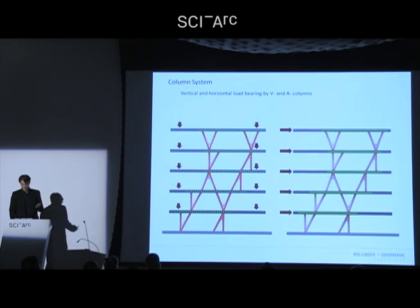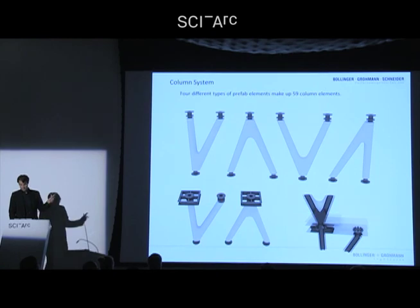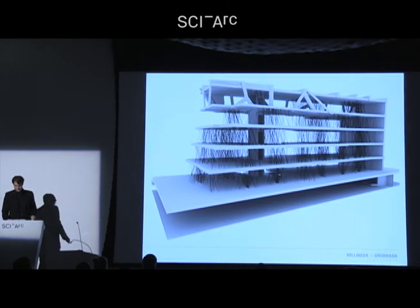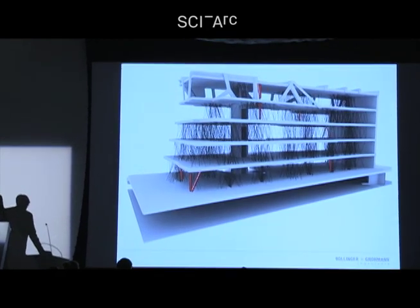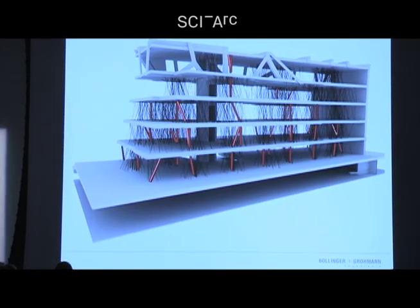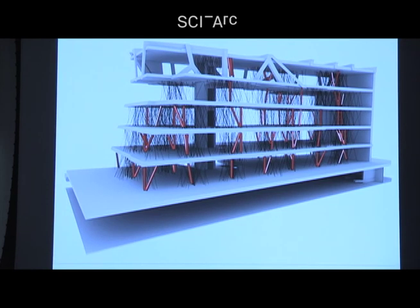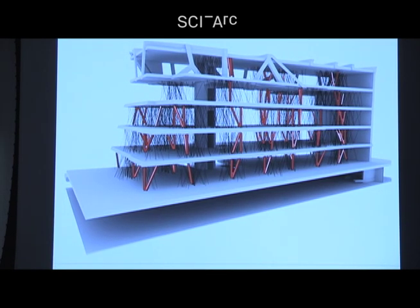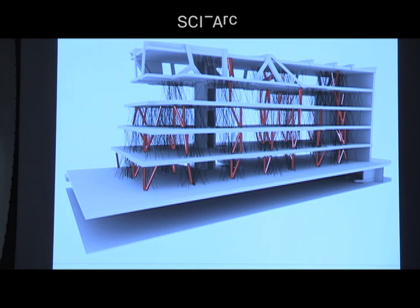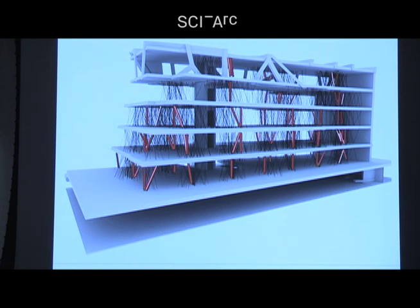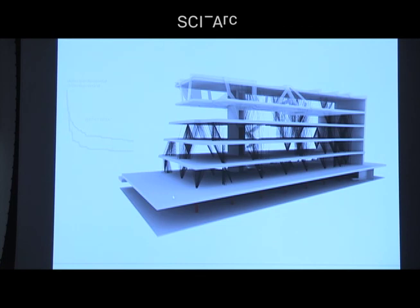you can use your computer to solve that. So those are the Vs and the As, and then we define the areas where the columns are allowed, and let the computer place them in a way that they stabilize the whole structure. So even if you build a regular building, it can happen that some more than a standard intelligence is needed to find the right solution.